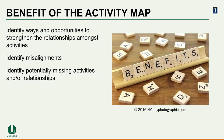The benefits of the activity map to value chain management are that it allows you to identify strong positive and/or negative interactions and relationships between activities, to potentially identify misalignments between the strategy and activities being performed by the firm, and also to identify potential missing activities and/or relationships.